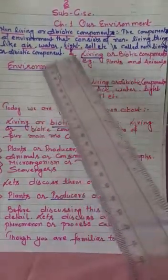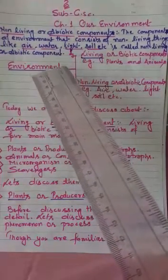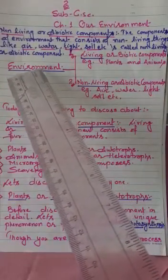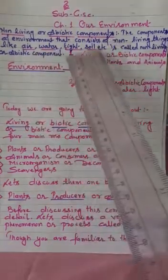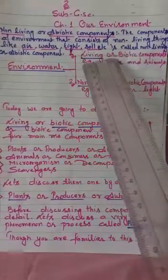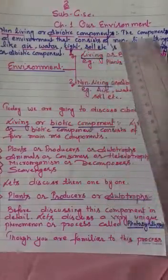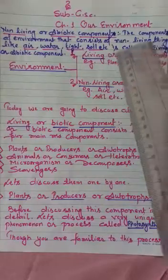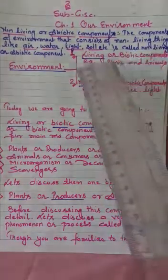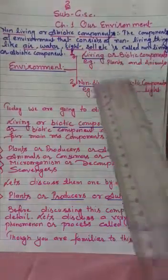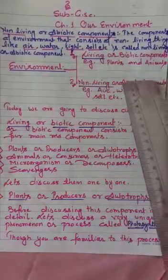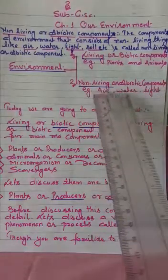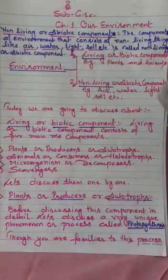Here you are observing a flowchart which helps us to recapitulate the studies we discussed earlier. It is well known to us what is our environment and that there are two components — living and non-living. Living is also known as biotic component because 'bio' means living. The biotic component includes plants and animals. Non-living or abiotic — 'abiotic' means non-living — examples are air, water, light, soil, etc.